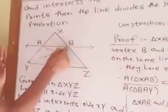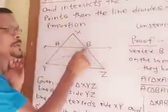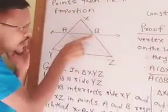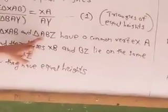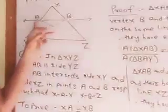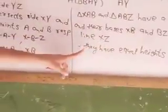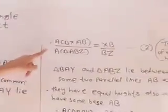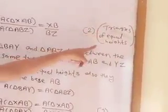Similarly, take the second pair: triangle XAB and triangle ABZ have a common vertex A. Their bases XB and BZ lie on the same line XZ. Therefore they have equal heights, and the ratio of their areas equals the ratio of their corresponding bases. So, area of triangle XAB upon area of triangle ABZ equals XB upon BZ. This is Equation 2 — triangles of equal heights.